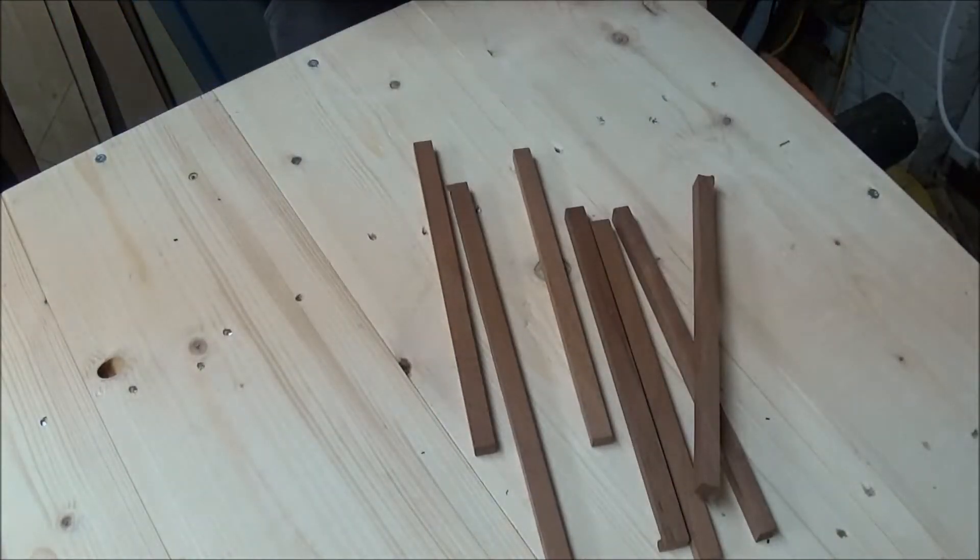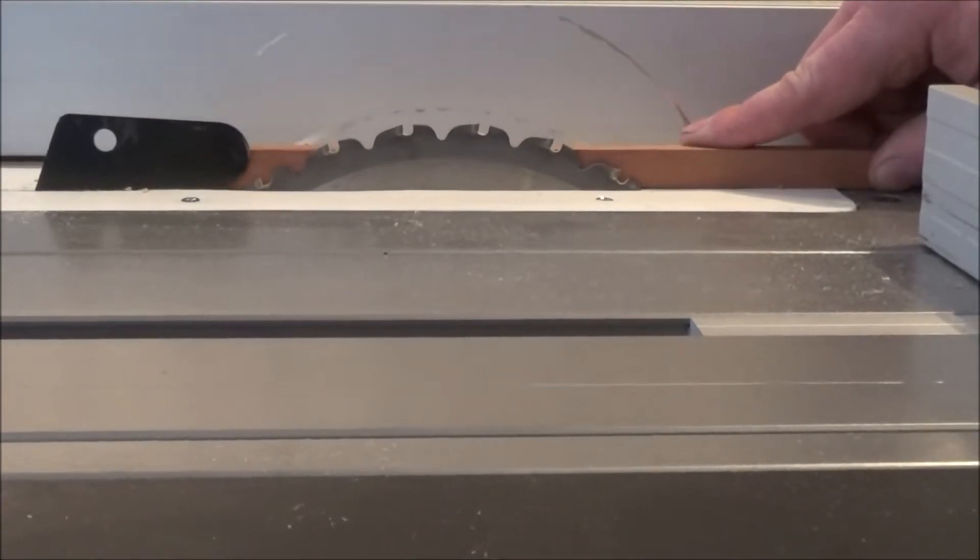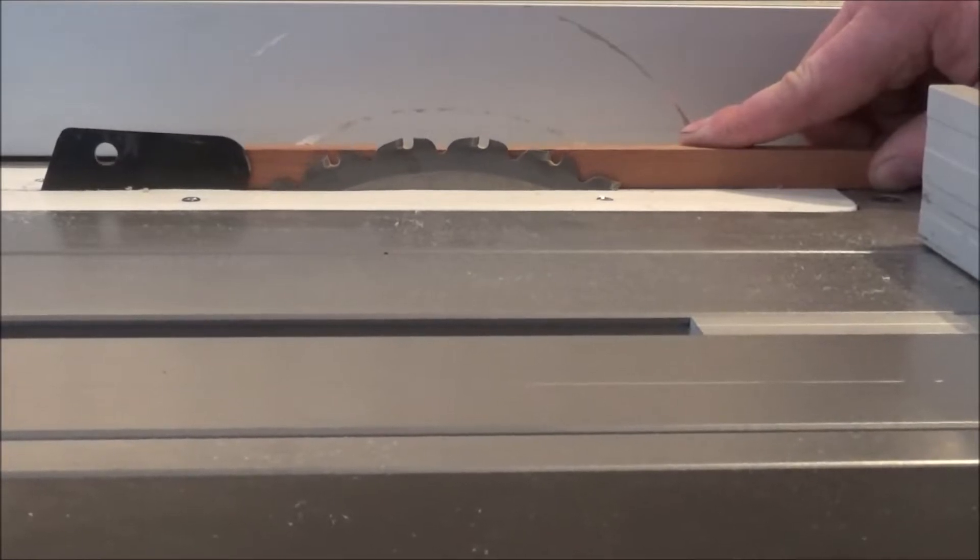I need to rip these strips of morante down into 2mm strips, so I set the height on the table saw blade and move the fence in, and then set about cutting the strips.